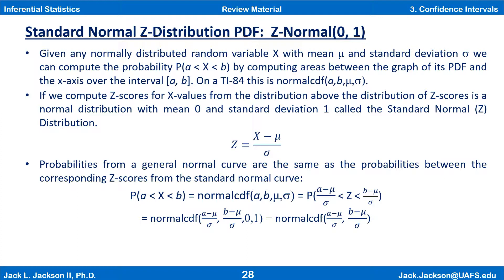If we compute z-scores for x values from a normal distribution, the distribution of z-scores is a normal distribution with mean 0 and standard deviation 1, called the standard normal or z-distribution. Probabilities from a general normal curve are the same as probabilities between the corresponding z-scores from the standard normal curve. So the probability that a is less than x is less than b equals the probability that z is between (a − mu)/sigma and (b − mu)/sigma, where z has a standard normal distribution.